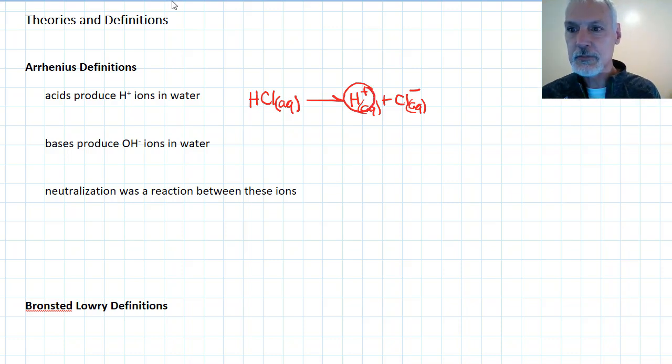Bases, on the other hand, produce hydroxide in water. So in his vision, something like sodium hydroxide when dissolved in water would produce sodium ions that are aqueous and the base particle, the hydroxide ion, which was also aqueous.